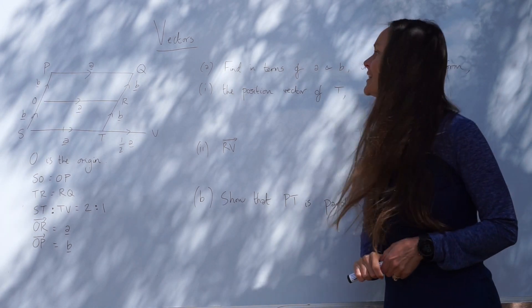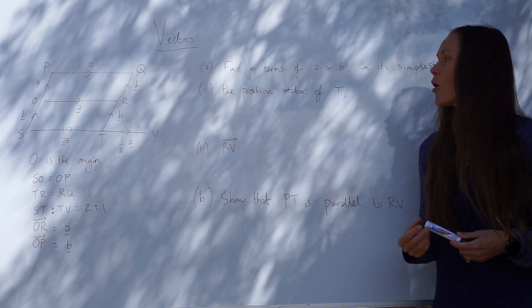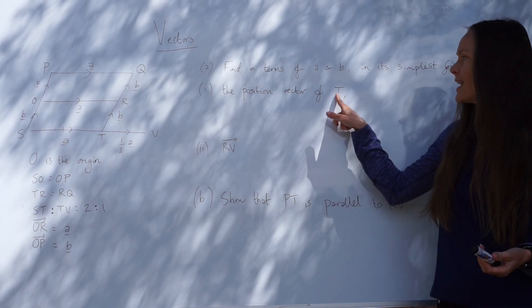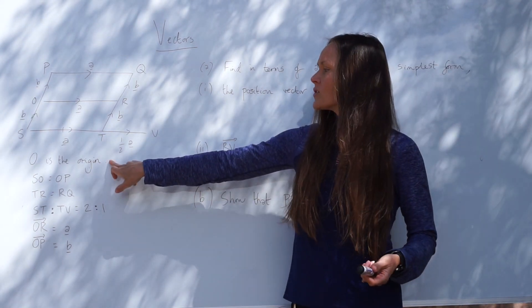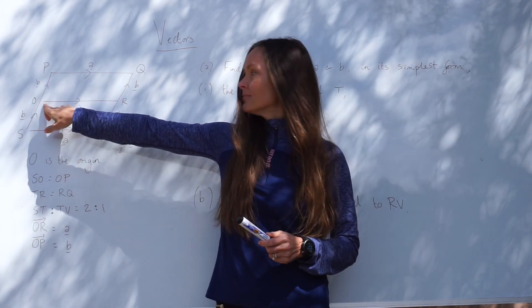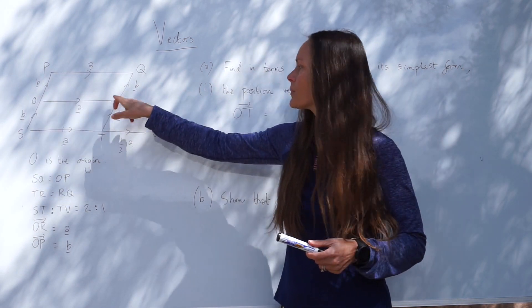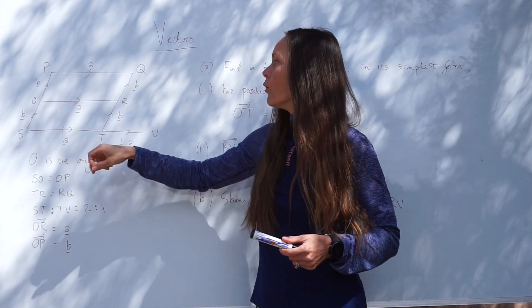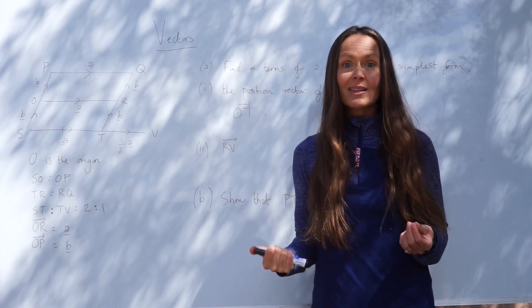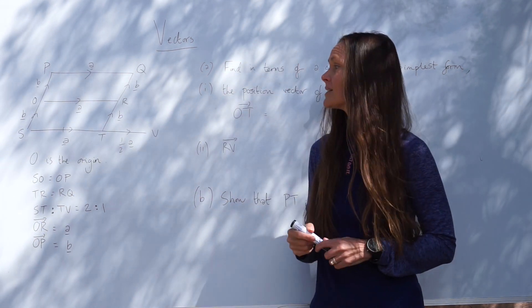Let's have a look at these questions. So for part A, it says find in terms of A and B, in its simplest form, the position vector of T. So when it says position vector, that just means from the origin to the letter T. So we have to work out O to T. Here is O on the diagram, and here is T. And it doesn't matter which way you travel to get to T. Whichever way you travel, as long as you simplify your answer, your answer will be the same. I'm going to travel this way, via S.